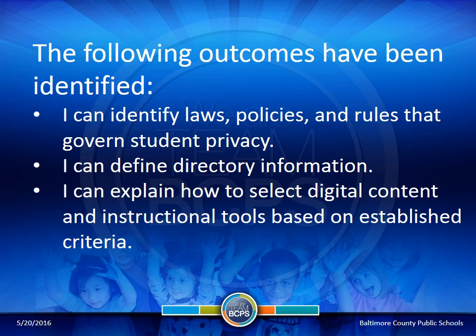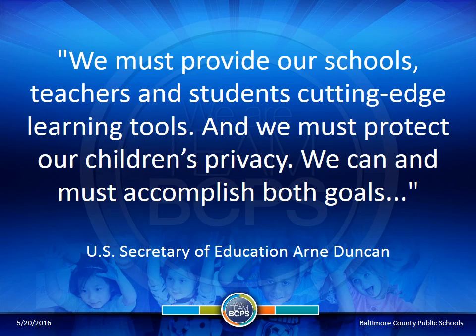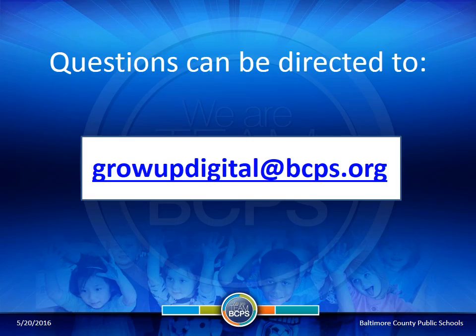Hopefully you now understand the laws and rules — FERPA, CIPA, and COPPA — and know how to define directory information, which includes the student's name, weight, athletic team participation, and awards received. That information can be released as long as there is no opt-out. You also know how to select digital content by choosing tools inside BCPS1 or only selecting tools that require just directory information. Our ultimate goal is to ensure we are providing cutting-edge technology while also securing our students. If you have any questions, please email growingupdigital@bcps.org. This presentation is also saved on the shared drive.